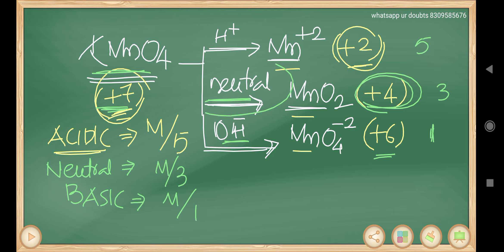Don't confuse — some books write 'basic medium' for both cases, but distinguish neutral or weakly basic medium (MnO₂) from strongly basic medium (MnO₄²⁻). To summarize: acidic medium — equivalent mass = M/5; neutral medium — M/3; basic medium — M/1. The molecular mass of KMnO4 is 158.